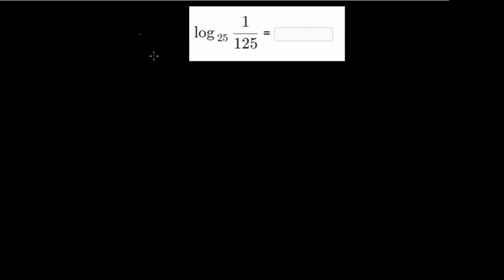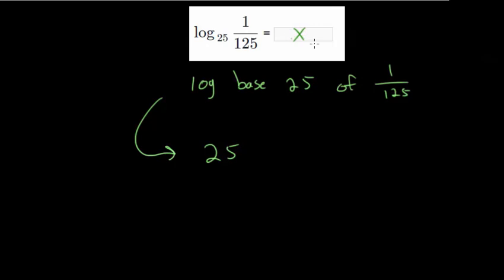So this logarithm is just log base 25 of 1 over 125. So we can rewrite this in our exponential notation. The base is 25. And let's just set this equal to x. That's our missing exponent here. So we put x up there. And this will be equal to the inside of the logarithm, which is 1 over 125.